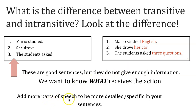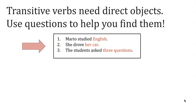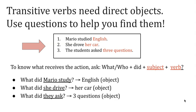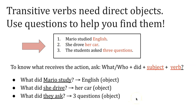You want to add more parts of speech to your sentences so that they can be more detailed and specific. If you're not sure how to find the direct object, you can use the questions 'What?' or 'Who?' For example: 'What did Mario study?' — He studied English, so 'English' is the direct object. 'What did she drive?' — Her car; 'her car' is the direct object. 'What did they ask?' — Three questions; 'three questions' is the direct object.